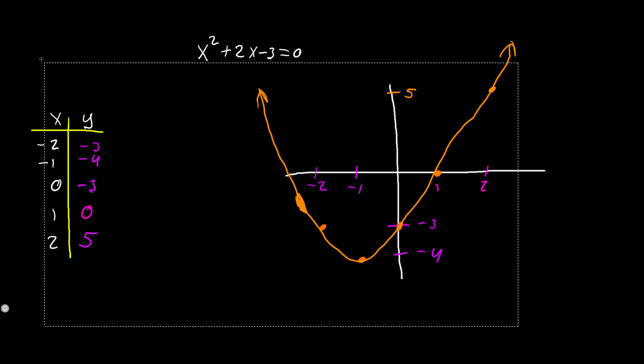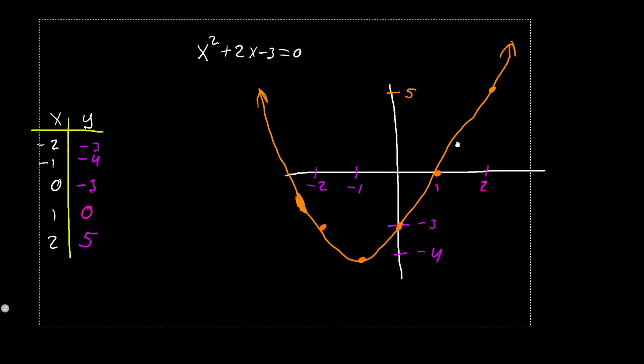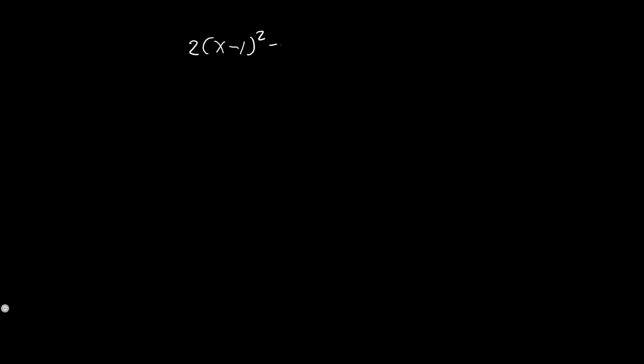Now we're going to go ahead and look at vertex form. We looked at the general case using standard form. Now we're going to look at vertex form where we have 2(x - 1)² - 2 = 0. We're going to make the table again on the left and also make a graph on the right.